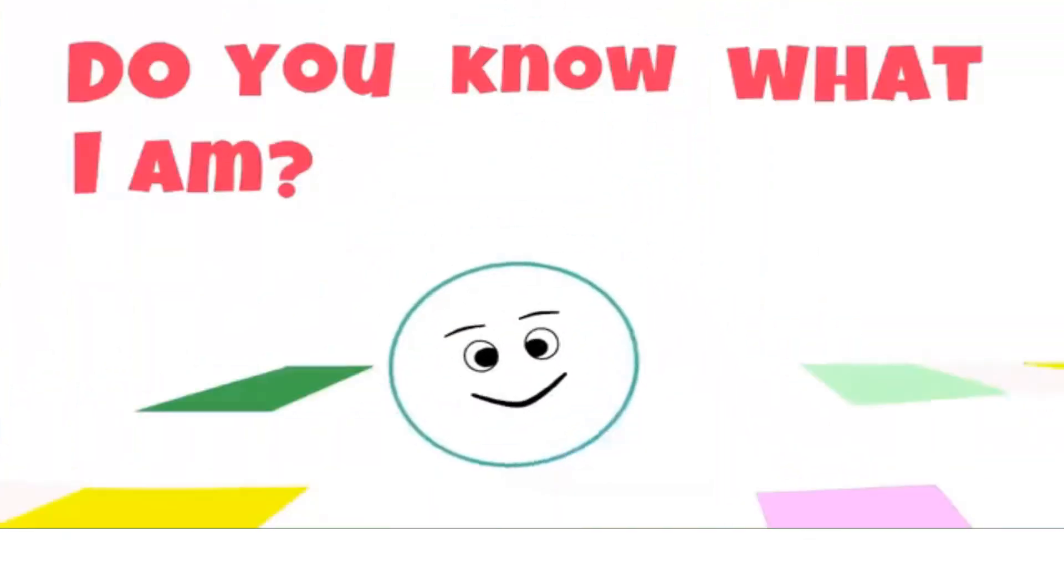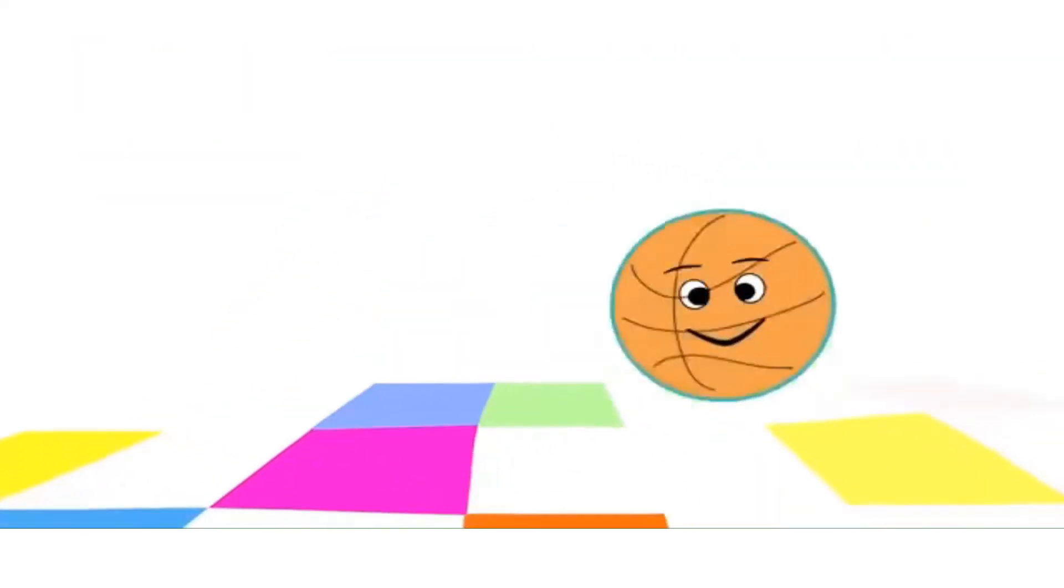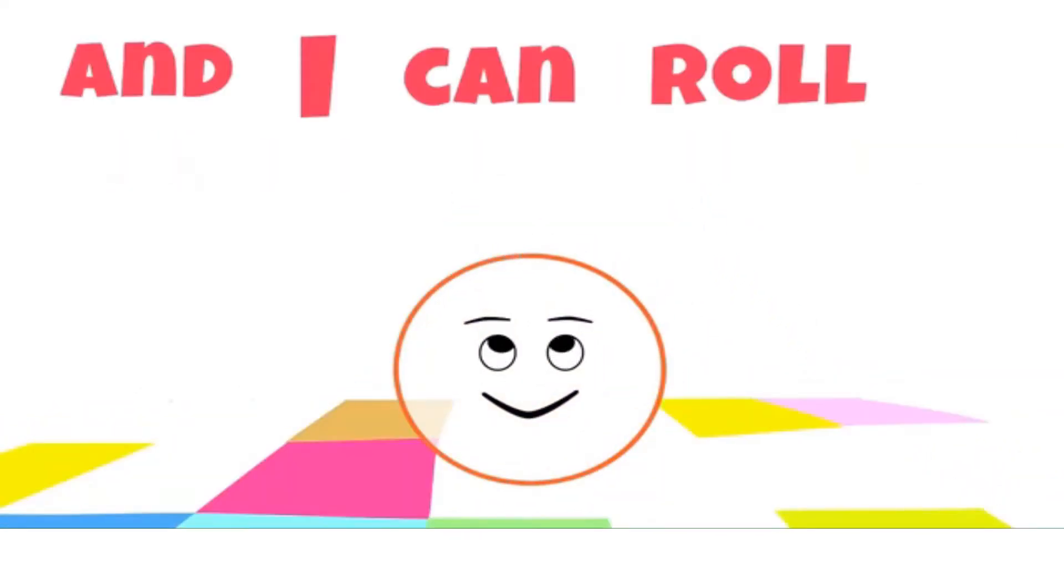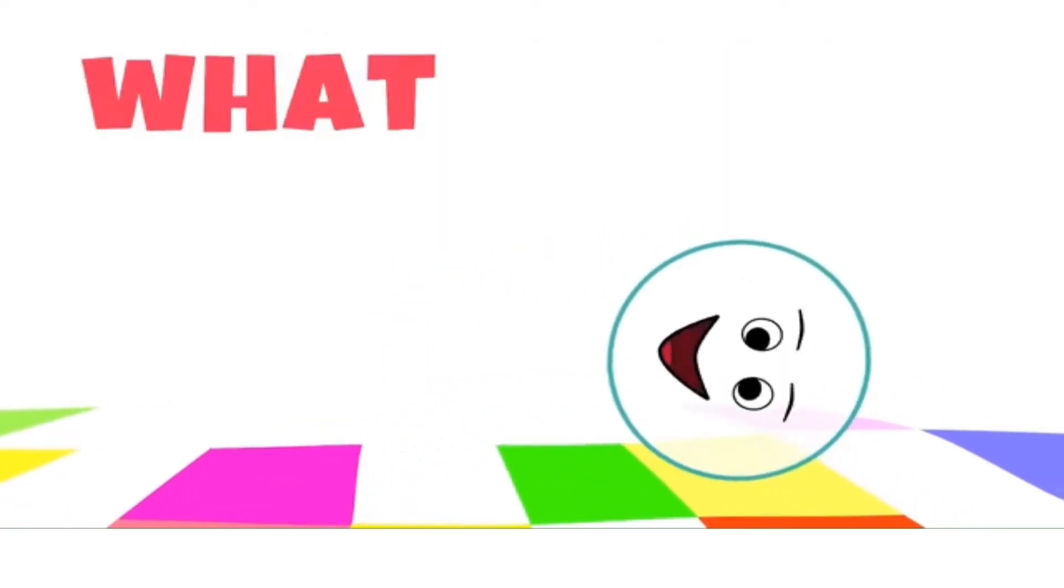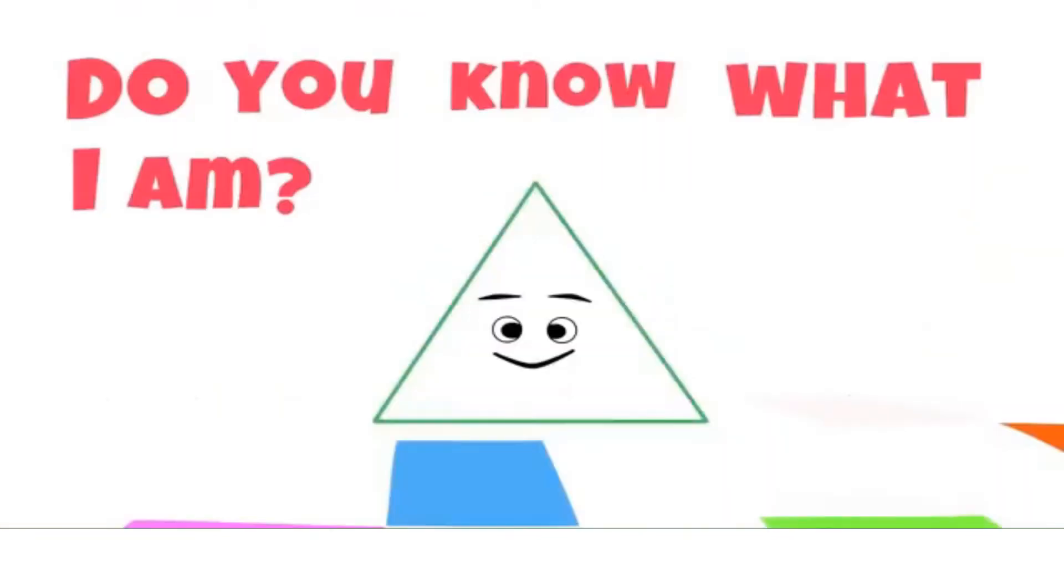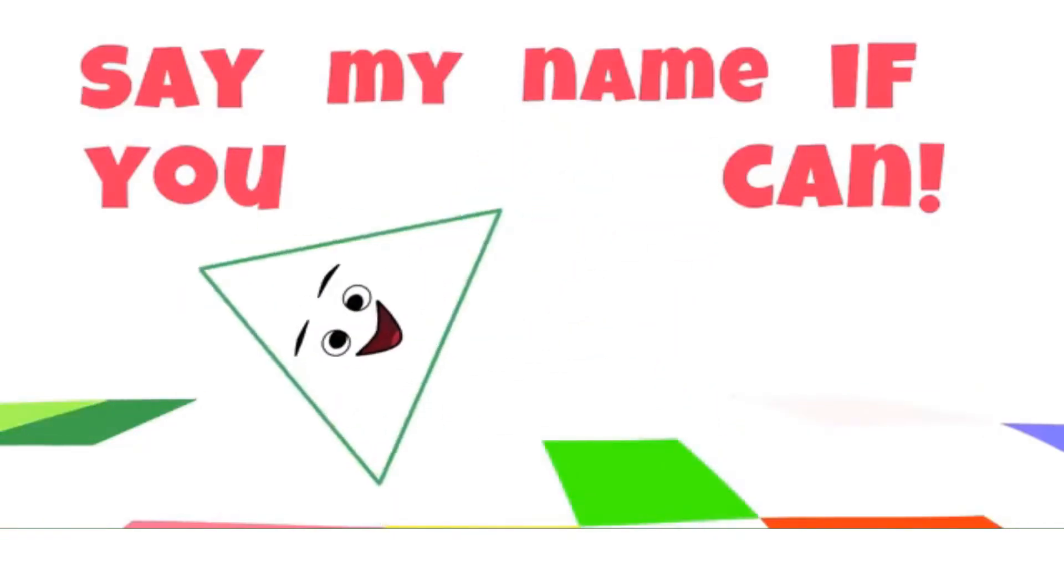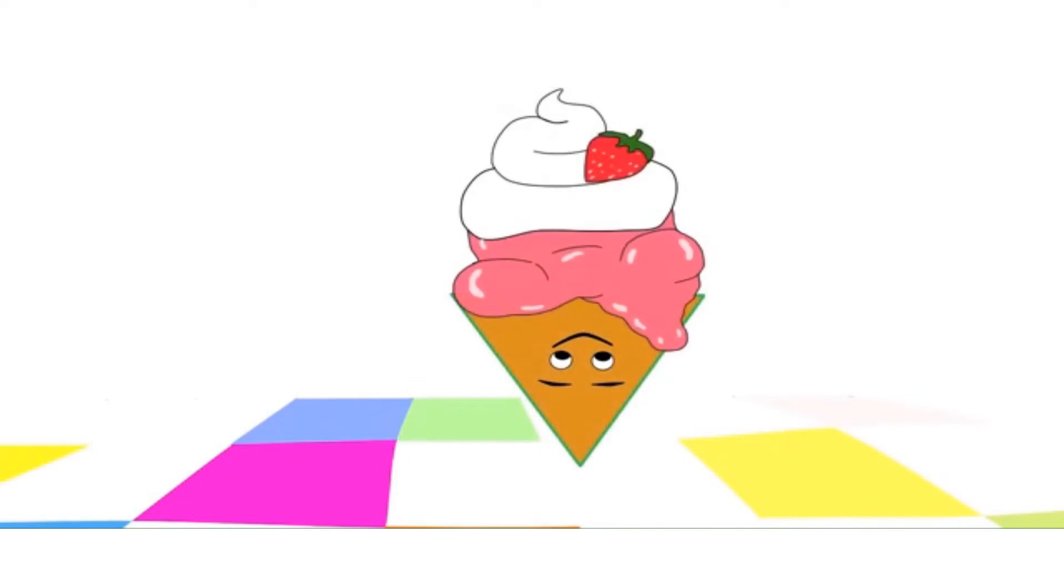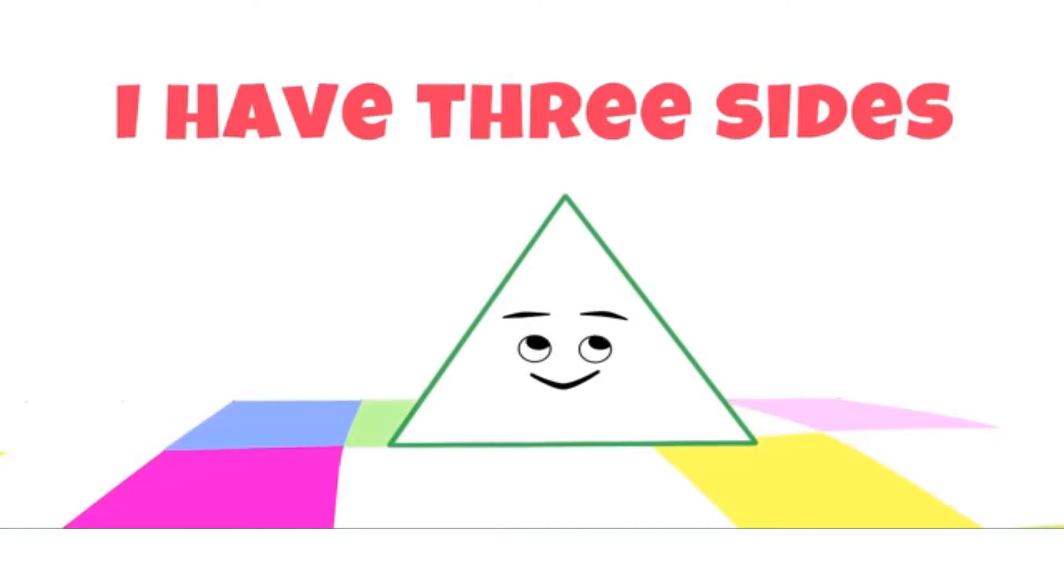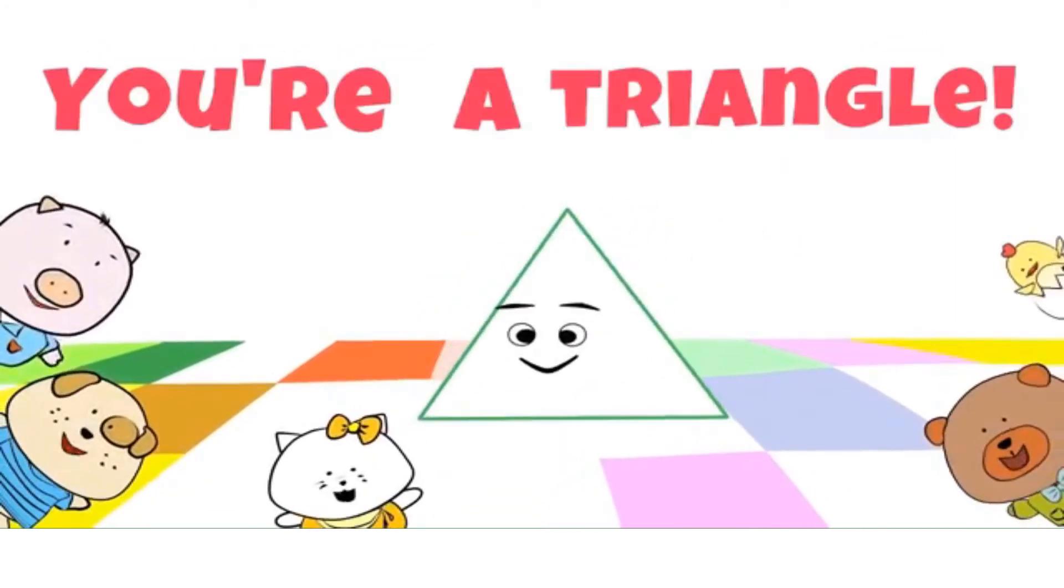Do you know what I am? Say my name if you can. I have just one line that goes round and round, and I can roll on the ground. What am I? You're a circle! Do you know what I am? Say my name if you can. If you look really close, you will see, I have three sides. One, two, three. What am I? You're a triangle!